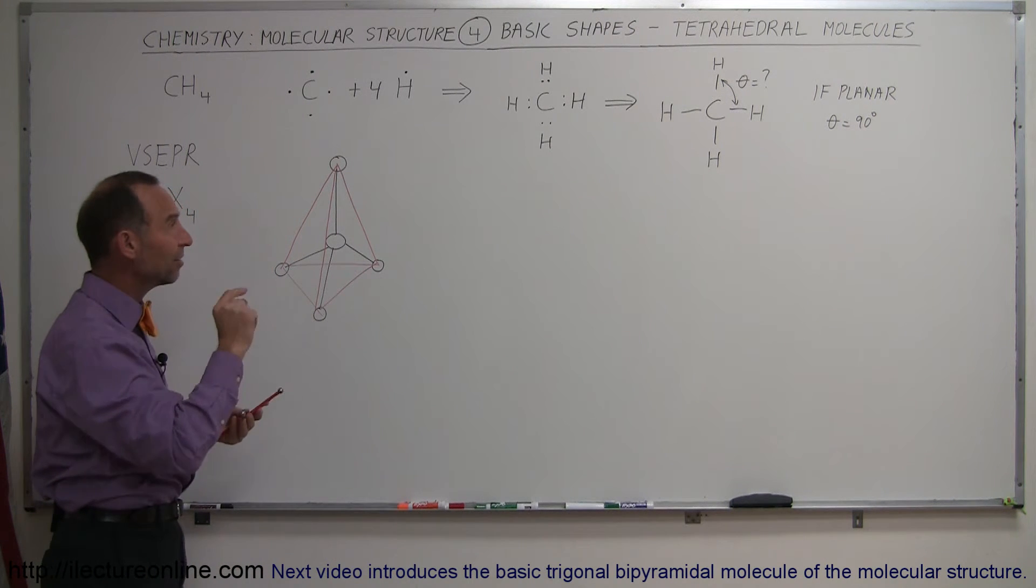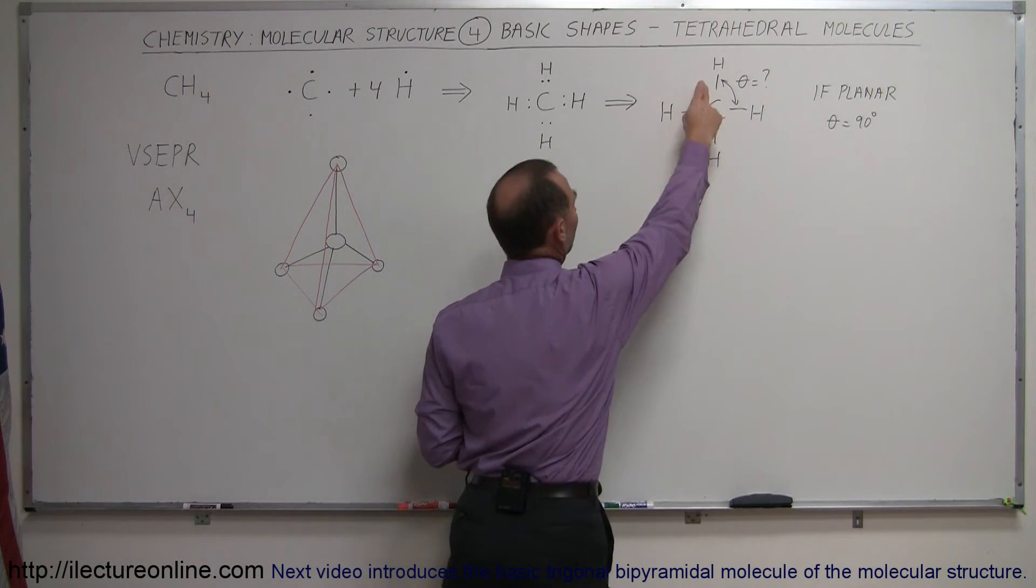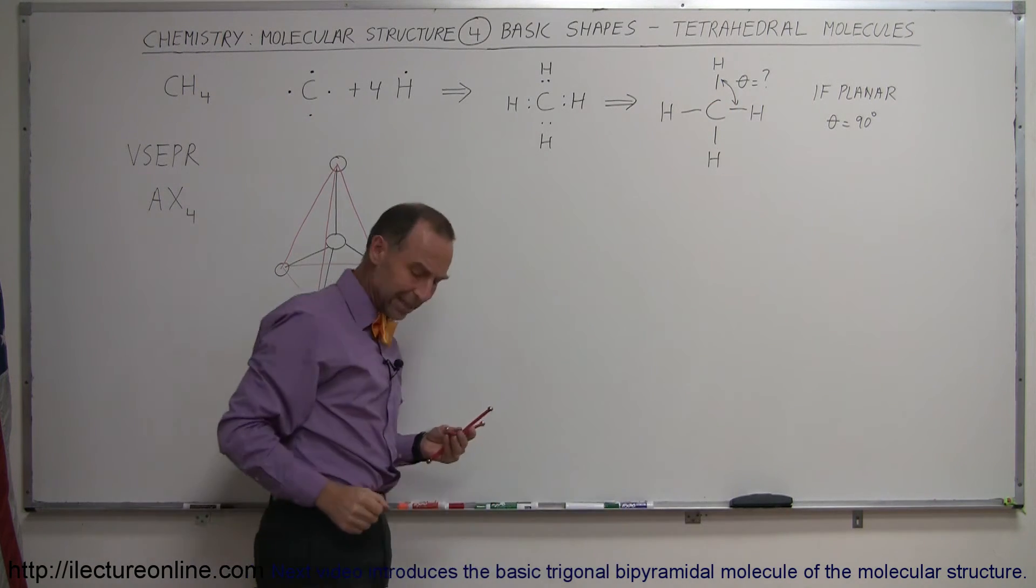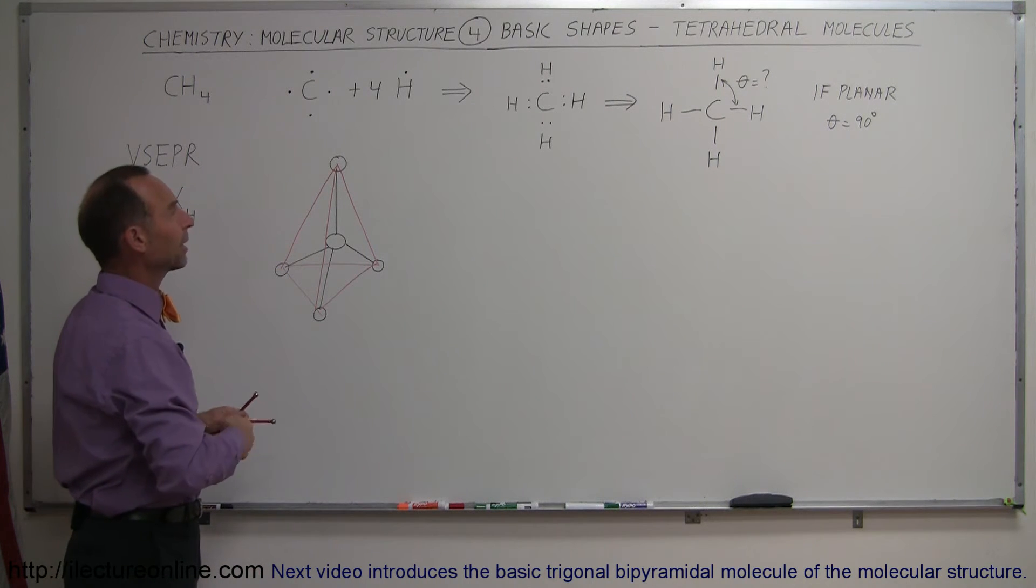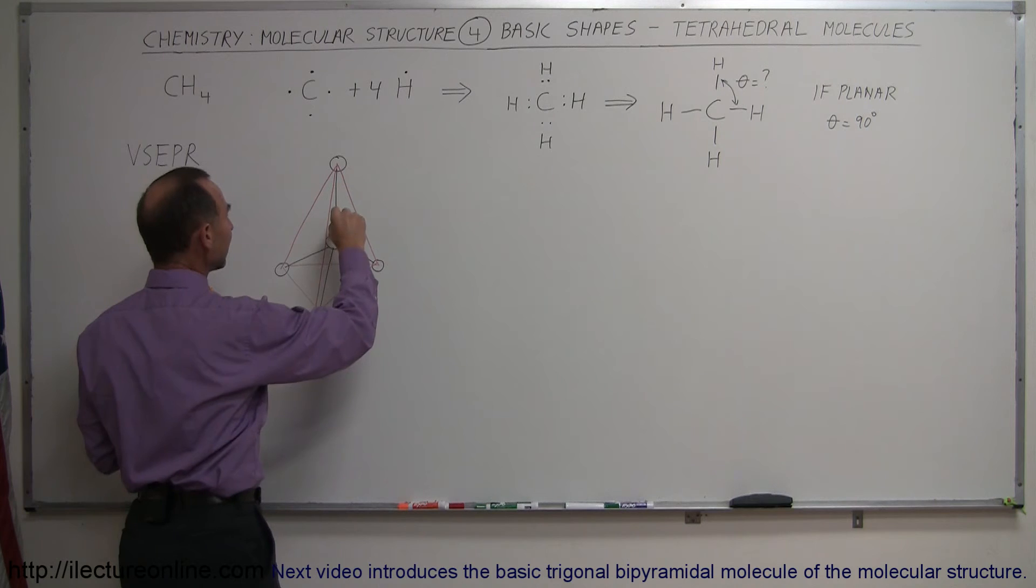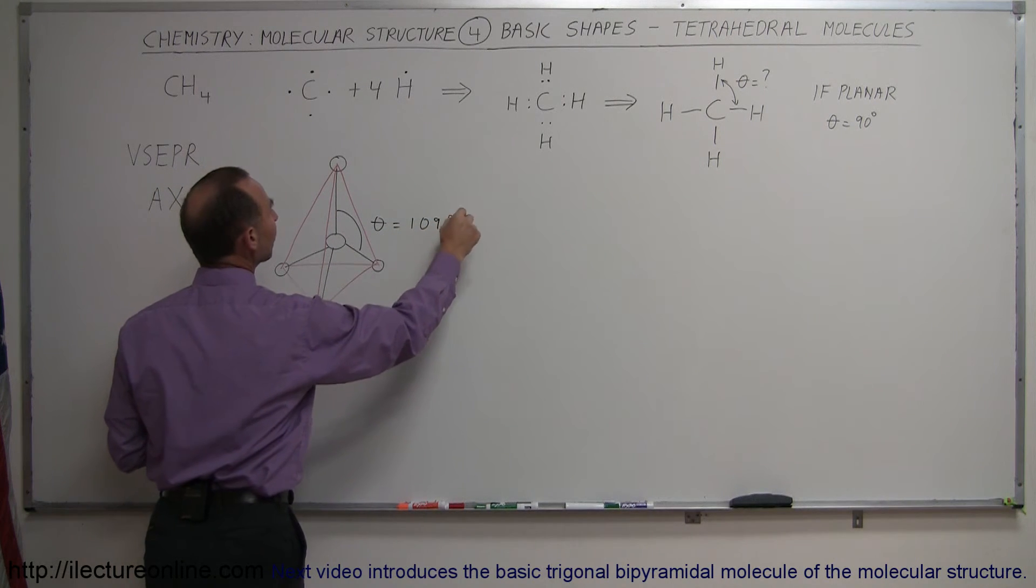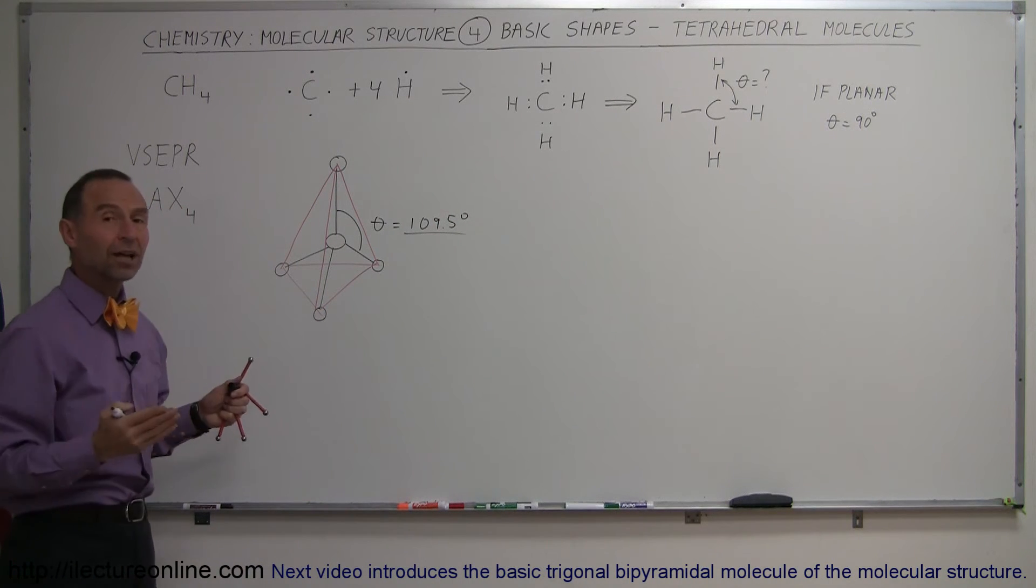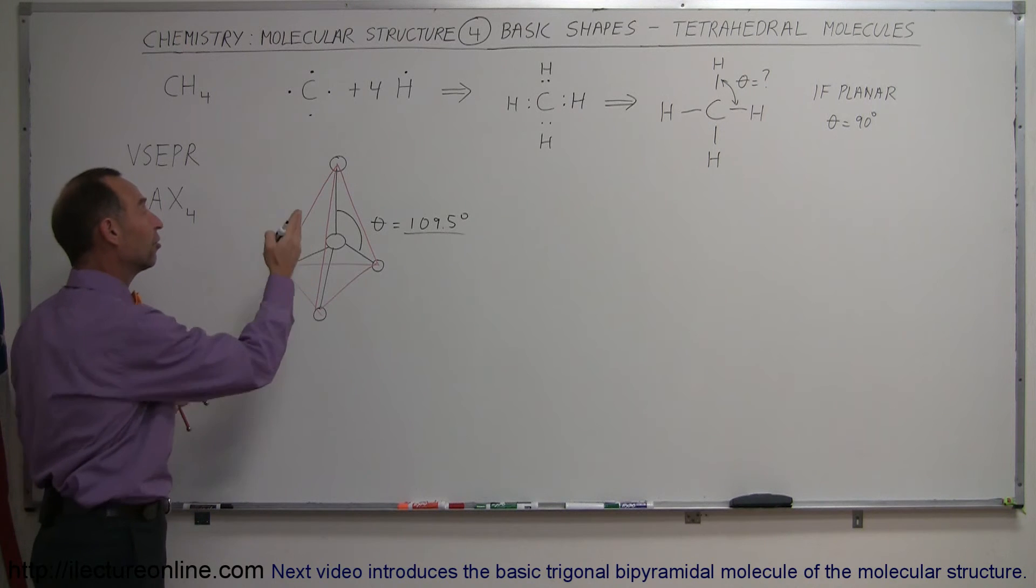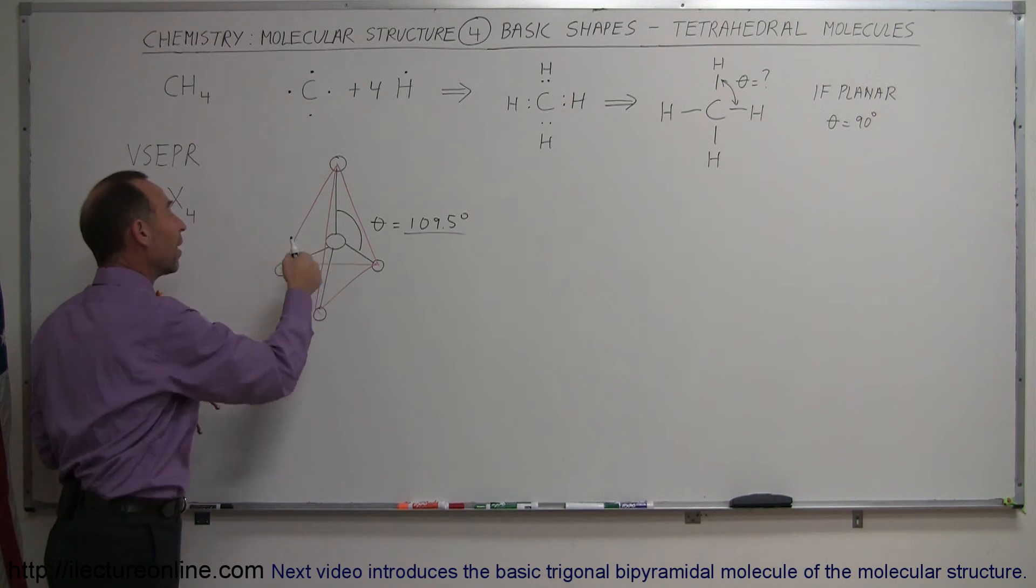However, when that happens, the distance between those bond electrons is only 90 degrees, an angle of 90 degrees. And if it takes on a tetrahedral shape like that, the bond angle is 109.5 degrees. So theta in this case would be 109.5 degrees. Simply the force of repulsion forces it into that shape because in that shape that is the largest possible angle you can have between the four sets of bonded electrons.